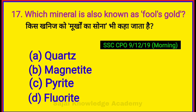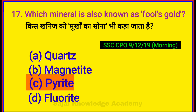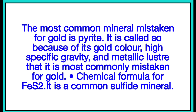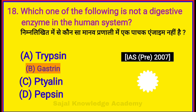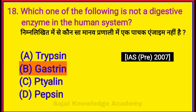Which mineral is also known as fool's gold? Option C: Pyrite. Which one of the following is not a digestive enzyme in the human system? Option B: Gastrin.